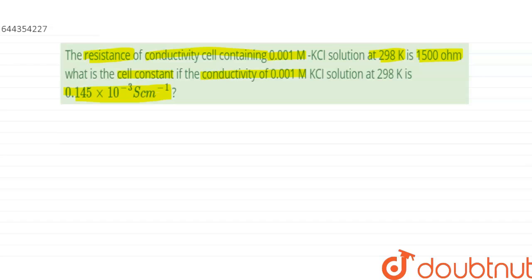So in the question we have been given that conductivity of cell, that is denoted by kappa, is equals to 0.145 into 10 to the power minus 3 Siemens centimeter inverse, and resistance of cell is given as resistance, that is denoted by R, is given as 1500 ohm.